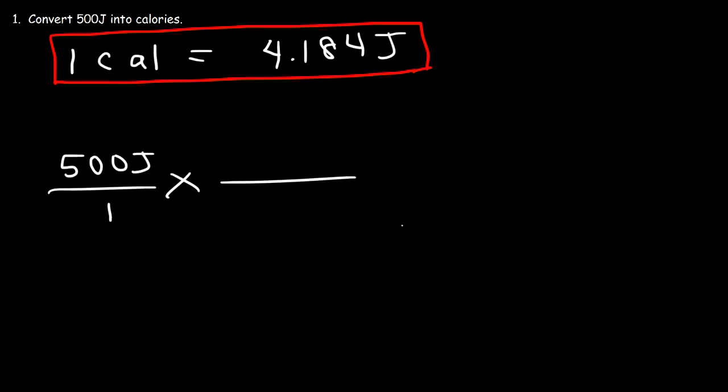Now in the next fraction, you want to put the unit joules on the bottom so that it's going to cancel. So there's 4.184 joules for each calorie. All we need to do in this example is simply take 500 and divide it by 4.184. So the answer is 119.5 calories. That's equal to 500 joules.